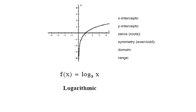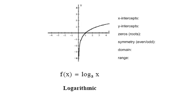The parent logarithmic function has one x-intercept: the point (1, 0). It has no y-intercepts. The graph has a vertical asymptote along the y-axis, traveling just to the right side of the y-axis from bottom to top, then intersecting the x-axis at (1, 0). It does not have even or odd symmetry. The domain is all x values from 0 to positive infinity, not including 0, and the range is all real number values from negative to positive infinity.